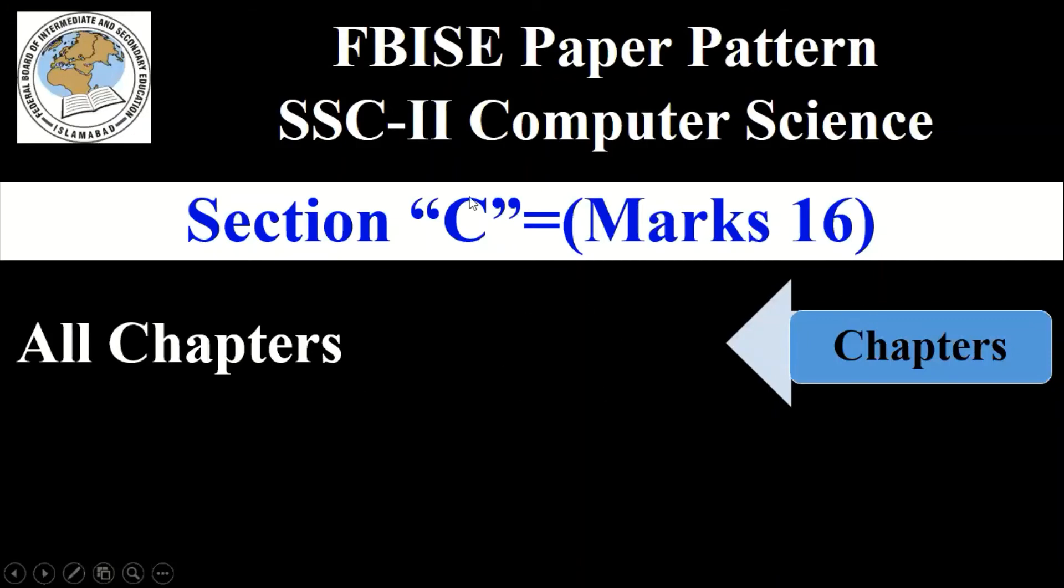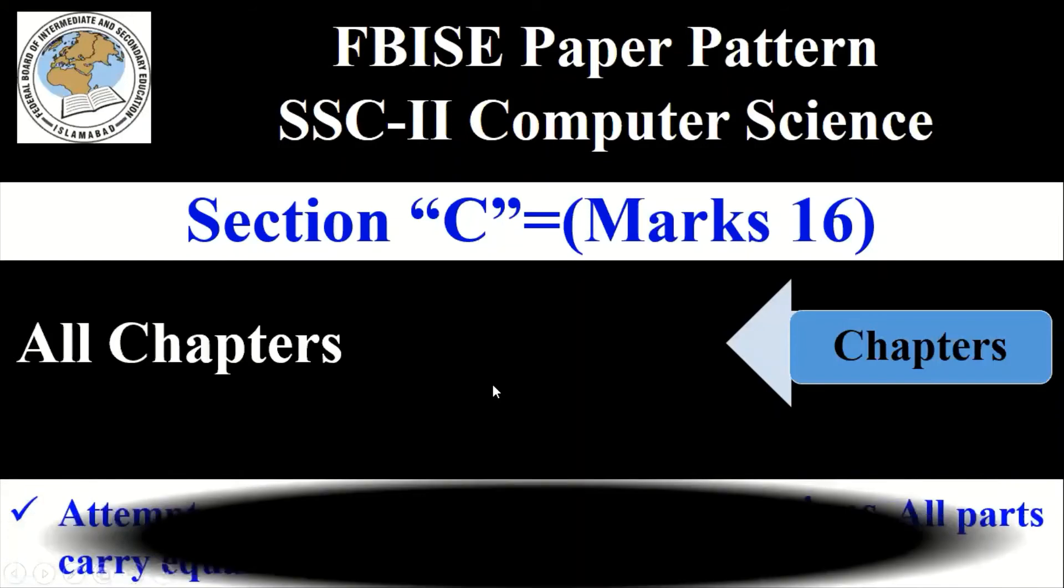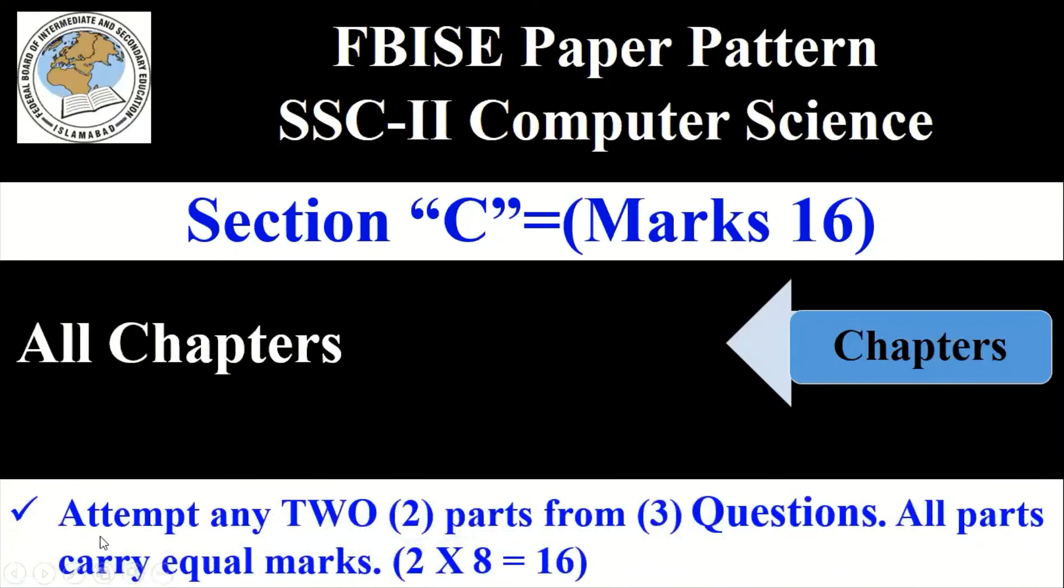How will we get 16 marks from Section C? You have to attempt any two questions or two parts from the three given questions. That means you have one question choice. All parts carry equal marks, which means all questions have eight marks. Eight times two is 16, or 2 x 8 = 16, so you will get 16 marks in Section C.